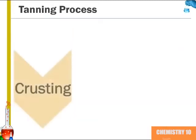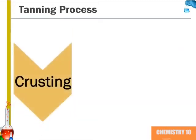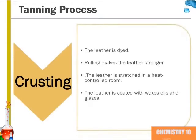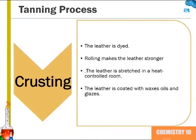After the leather is tanned, it can go through the crusting process. In this process, the leather is dyed, rolling can be used to make the leather stronger, and it can be stretched in a heat-controlled room. Finally, the leather is coated with waxes and oils as well as glazes to make it more appealing.